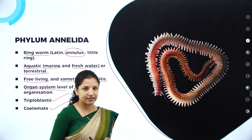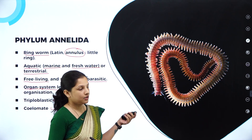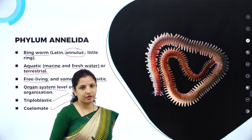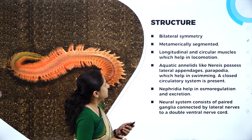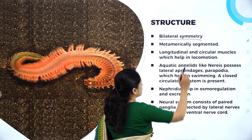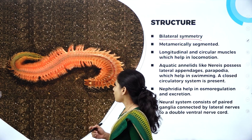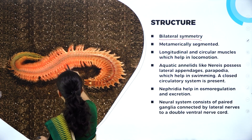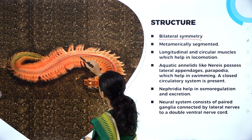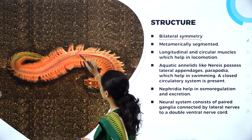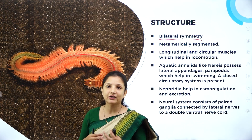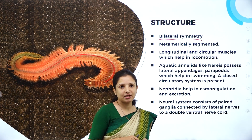They do have a body cavity, which is why they are coelomates. Here you can see the diagram of Nereis, which is an aquatic annelid — it almost looks like a millipede or centipede, but it is Nereis. Moving on to structure, they are bilaterally symmetrical. Bilateral symmetry means when I draw a line exactly in the center, this half is similar to the other half — they are like mirror images of each other. They are also metamerically segmented.